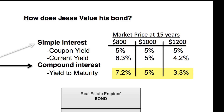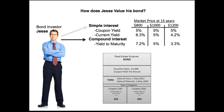But those current yield numbers aren't the real numbers. When we go to yield to maturity — which accounts for the difference between the price paid and the face value — the $800 bond actually gives a 7.2% return, the $1,000 bond gives 5%, and the $1,200 bond gives only 3.3%. That's 1.7% lower than you'd expect just looking at the coupon. The price you pay drastically affects what you actually see on your yield.